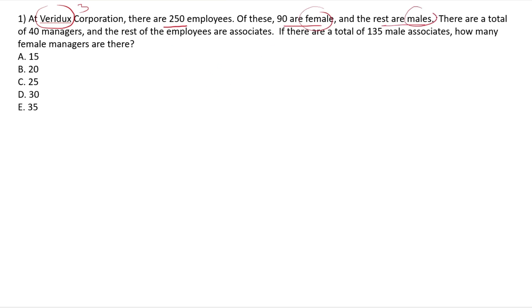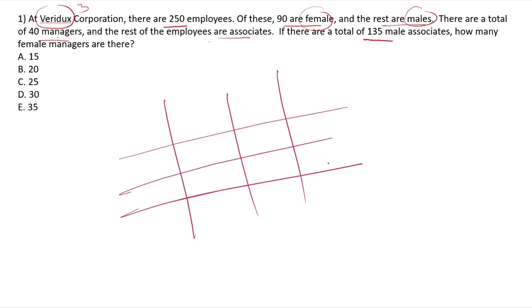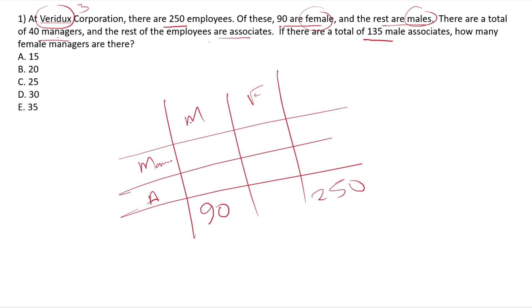New problem: out of 250 employees, 90 are female — so the rest are male. There are a total of 40 managers and the rest are associates. How many female managers are there? Set up the double matrix: male, female, manager, associate.